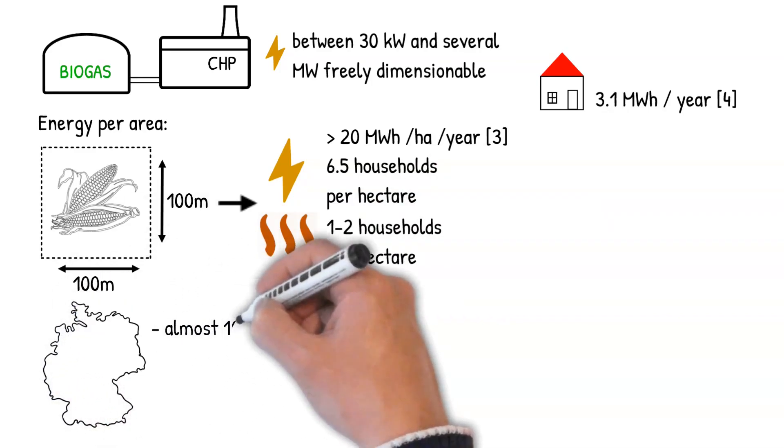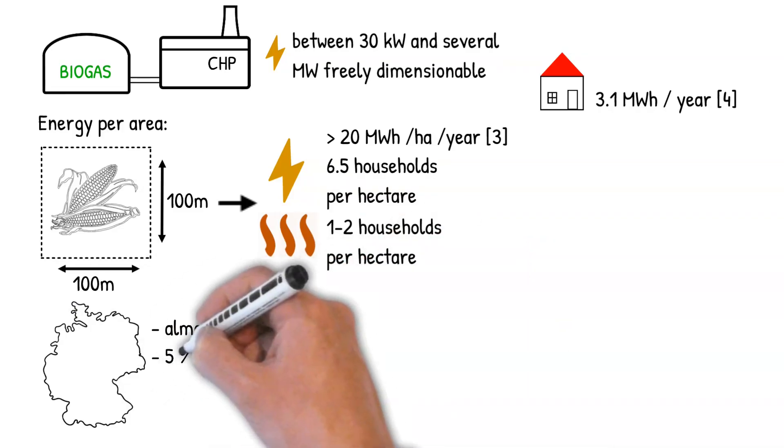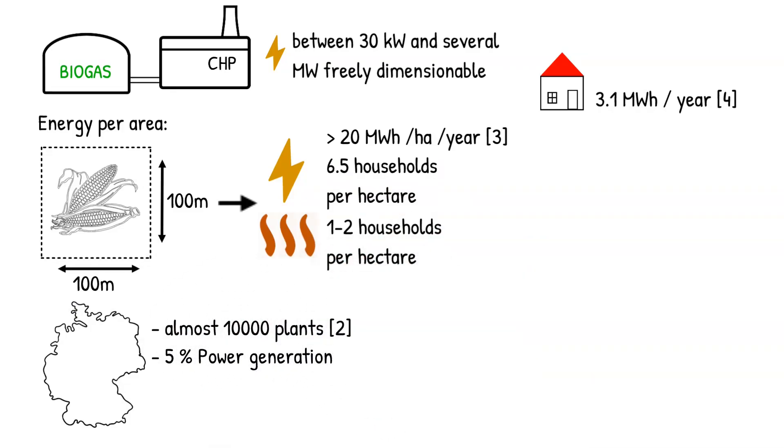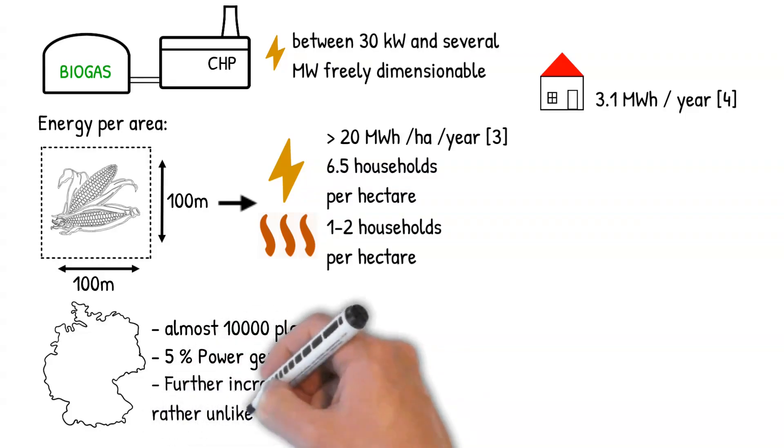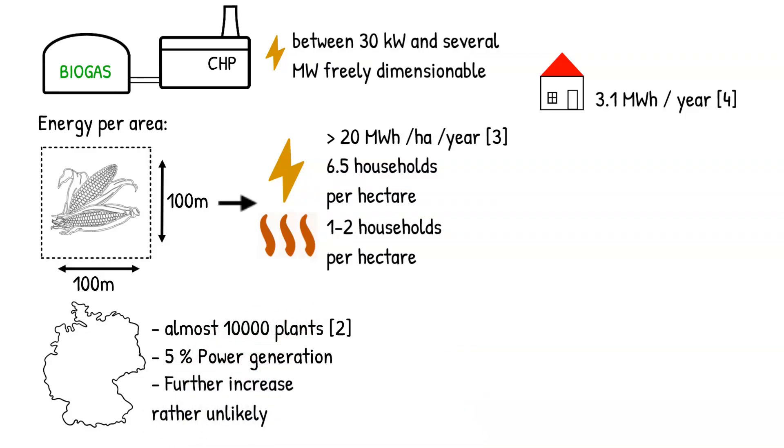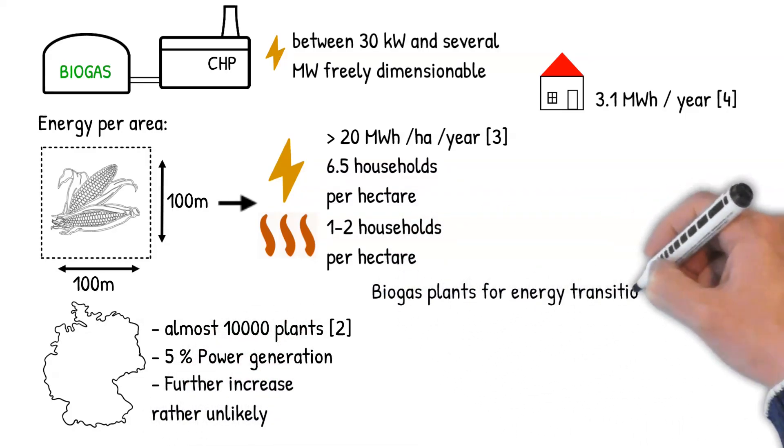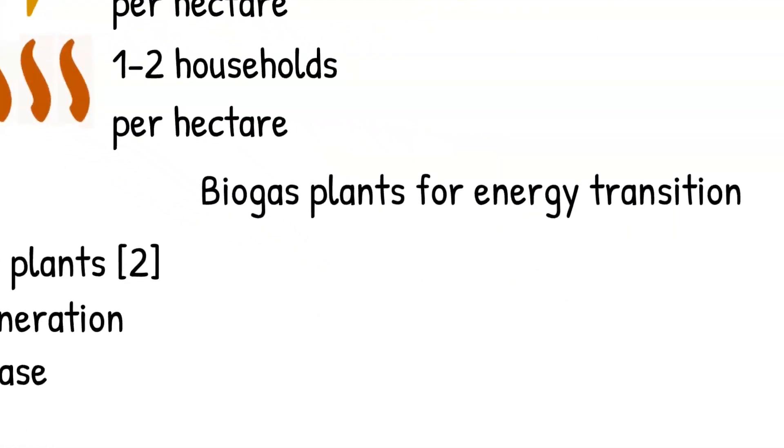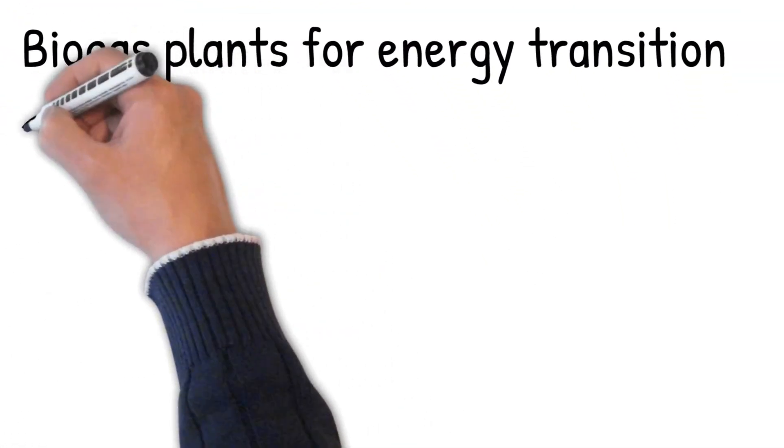Due to this large area required, Germany with almost 10,000 biogas plants and the electricity share of 5% is at a limit where a further significant increase does not make sense. Nevertheless, biogas plants can become a more important factor in the energy transition in the future.